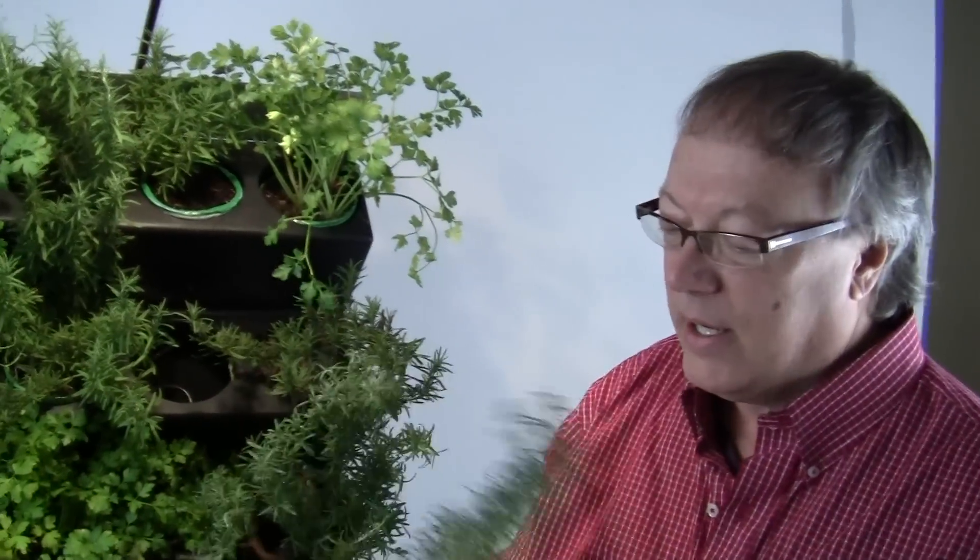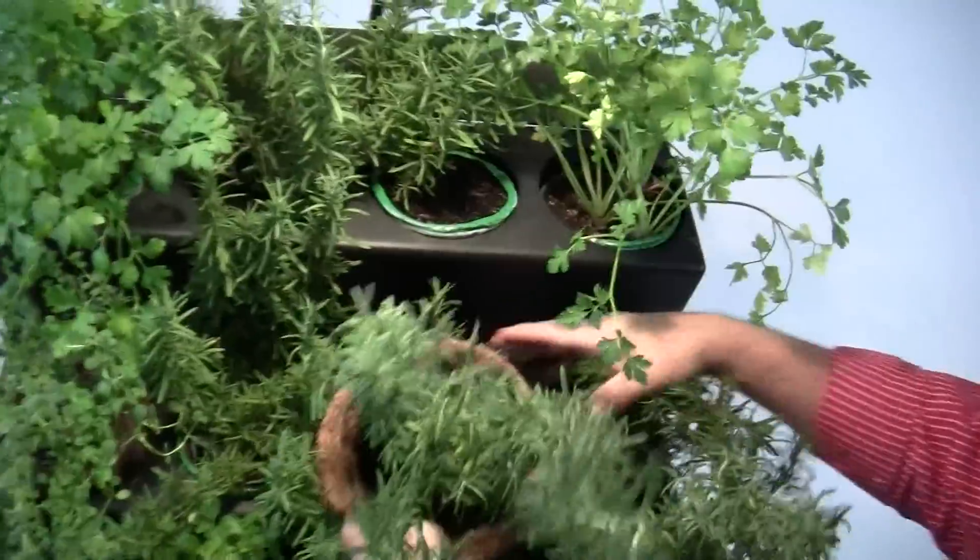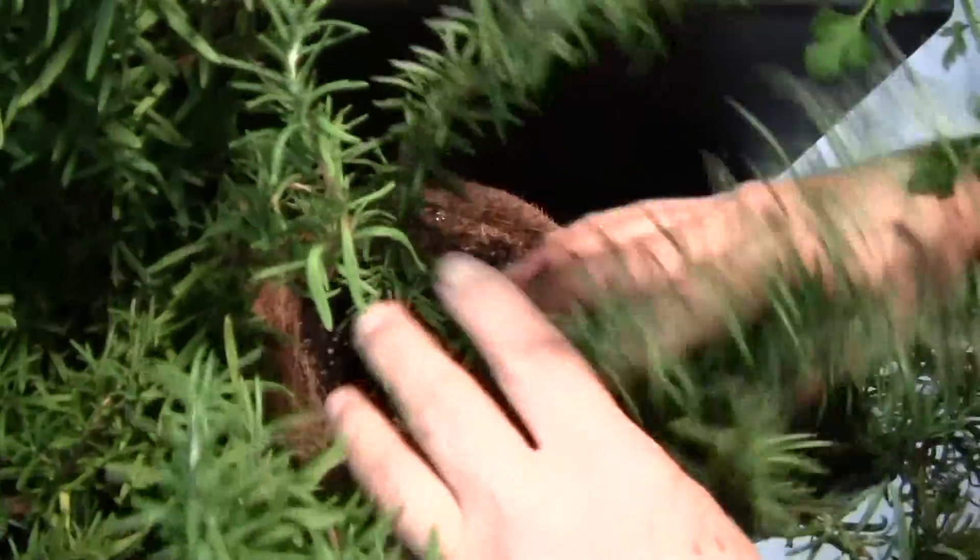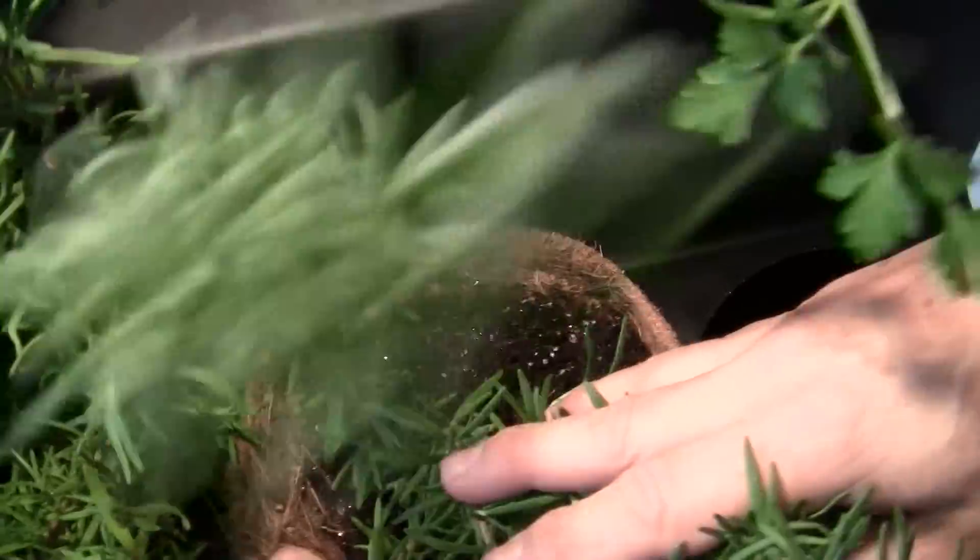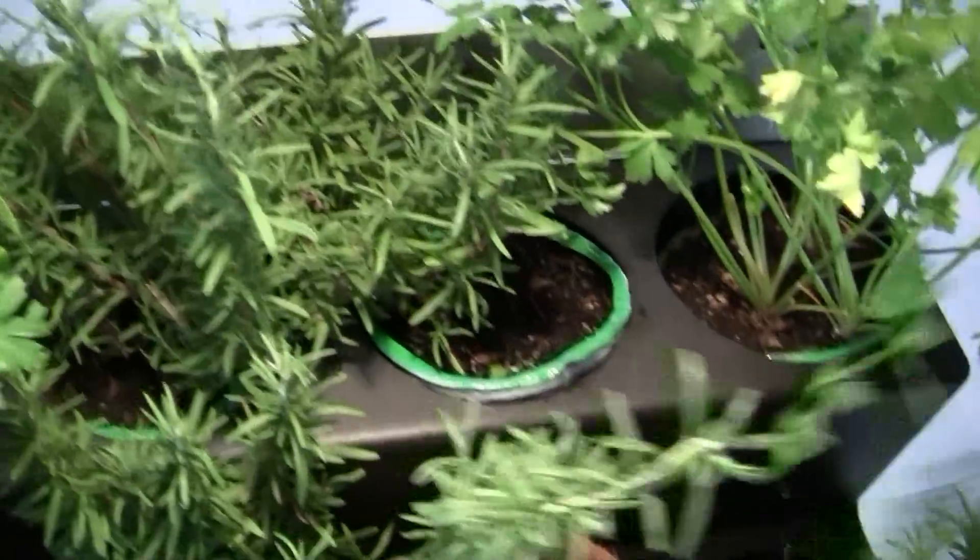We've got these big fuzzy sort of cocoa core pots here. And let me stick this in here. As you can see, the plant is getting watered from above. These are some pots from Bonnie Plants that fit in the system.